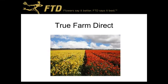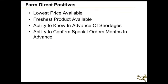On the opposite end of the spectrum is True Farm Direct. Positives: it's your lowest price available and your freshest product available — more likely than not still in the ground when you place your order. You have the ability to know in advance if there are going to be shortages. Farms will communicate issues like white rose plant problems so you can find alternatives. They can also confirm special orders months in advance — if you need 2,000 hydrangeas for a big party, you can put that order in well in advance knowing you'll get it.